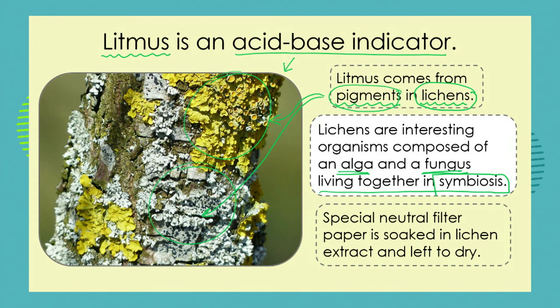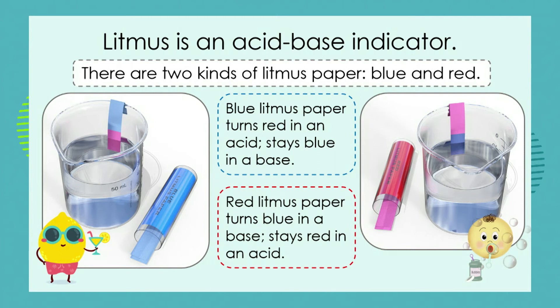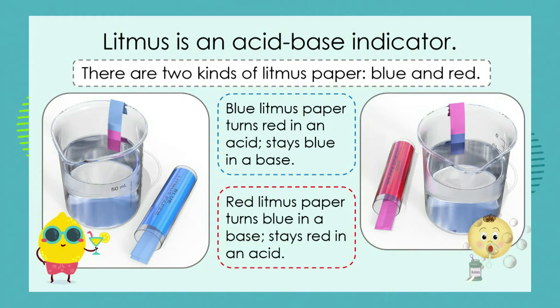Special neutral filter paper is soaked in that lichen extract and left to dry. This gives us what we call litmus paper. There are two kinds of litmus paper depending on which kind of lichen was used to make it: we can get red litmus paper and we can get blue litmus paper.